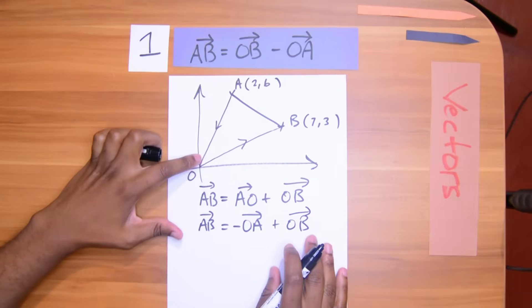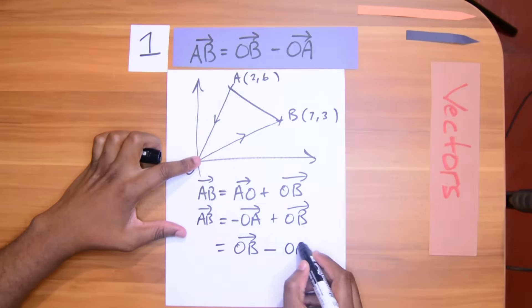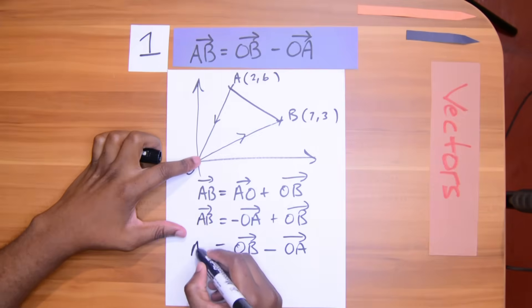So AB is equal to negative OA plus OB. And let's just write this over to make it look a little more sweet. OB first and put the negative sign in the middle with OA coming right after. And voila, we have the triangle law there.